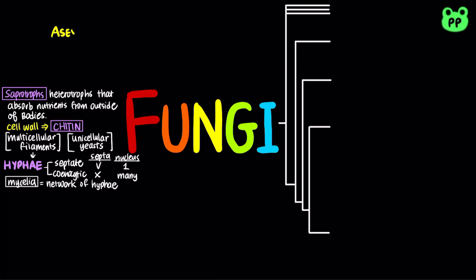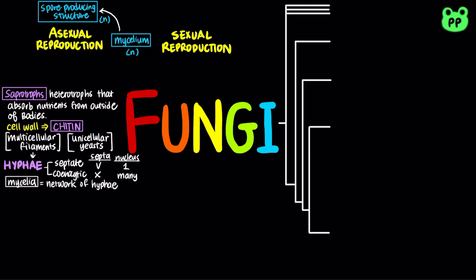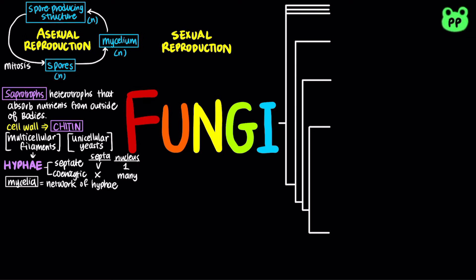Fungi can propagate themselves by producing a vast number of spores, either sexually or asexually. Fungal nuclei are normally haploid. During asexual reproduction, mycelium gives rise to spore-producing structures, which produce spores through mitosis. Spores eventually germinate into multicellular mycelium.